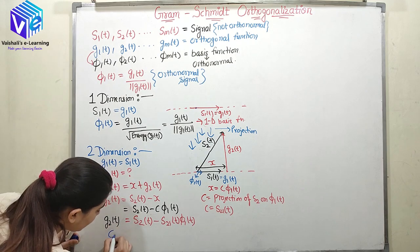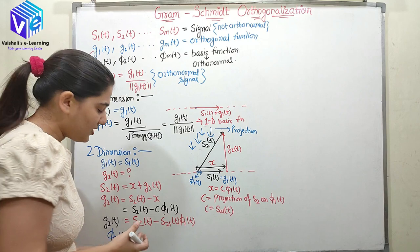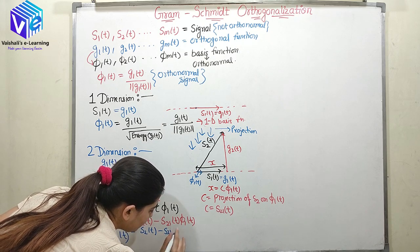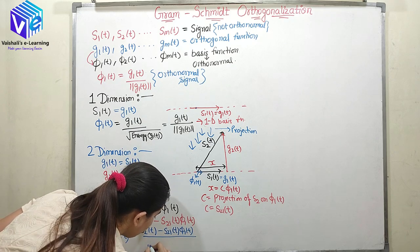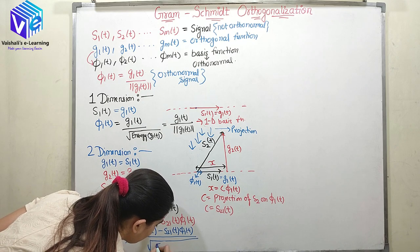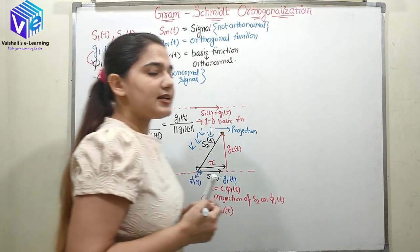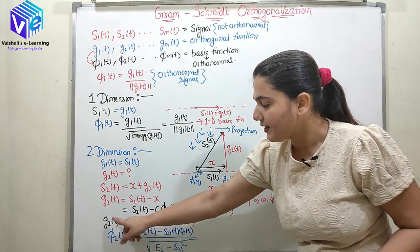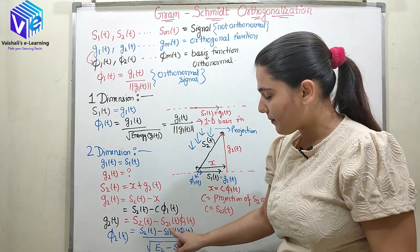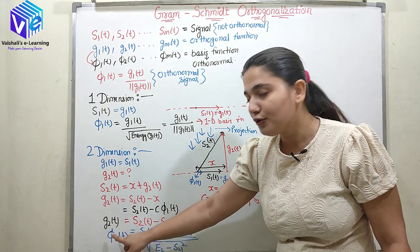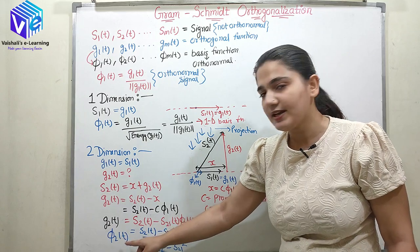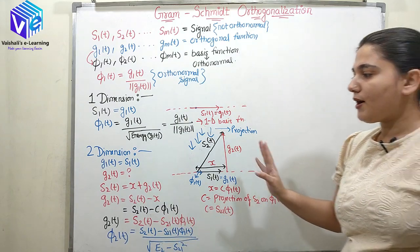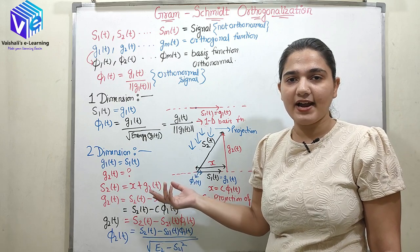Now if I need to find out φ₂(t): g₂(t) is the orthogonal function, and φ₂(t) is the orthonormal function. So φ₂(t) equals s₂(t) minus s₂₁(t)φ₁(t), divided by the square root of E₂ minus s₂₁². Its magnitude is the square root of E₂ minus s₂₁². I divide g₂ by its magnitude, and it becomes the orthonormal function. So φ₂(t), when divided by its magnitude, has magnitude equal to one — it is the orthonormal function.